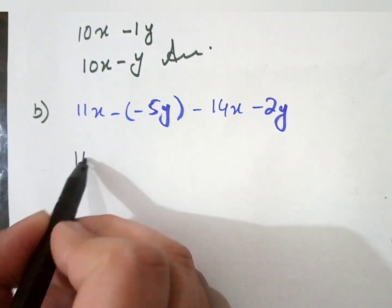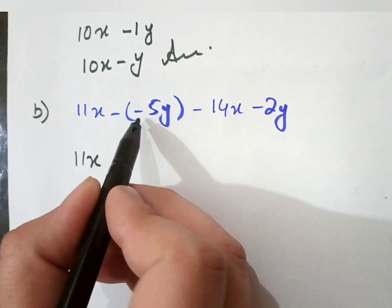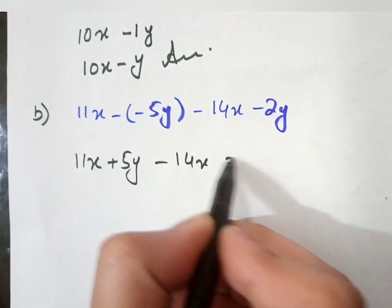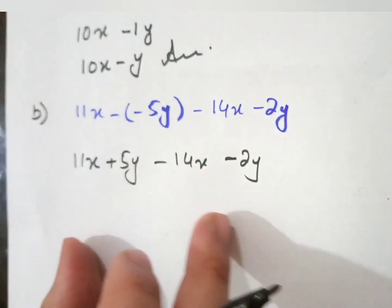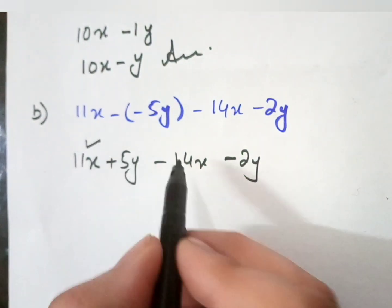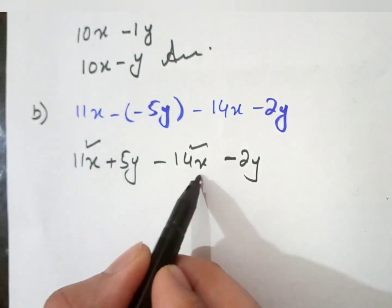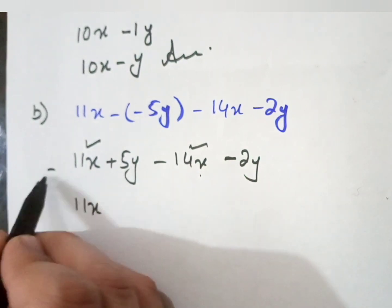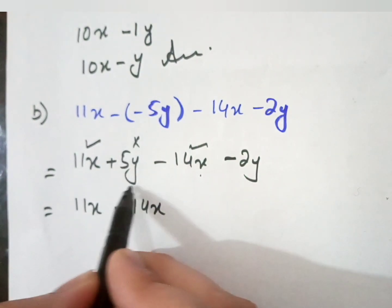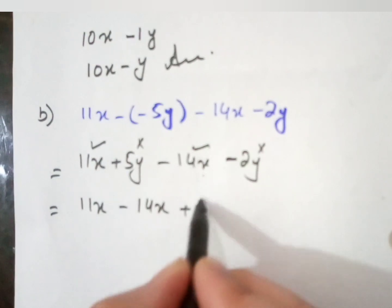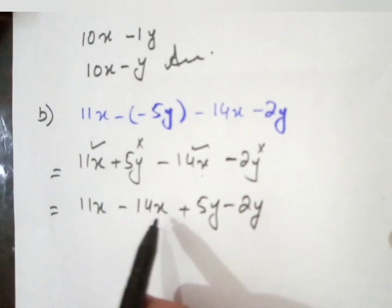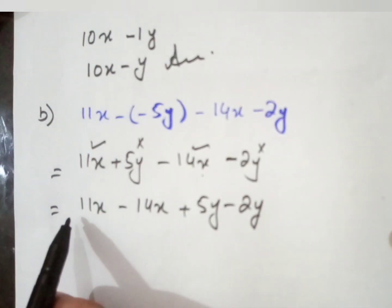In Part B, firstly we solve the bracket. There is a minus sign outside the bracket, so the inner signs will change: 11x plus 5 minus 14x minus 2y. Now rearrange the terms — write down the terms with the same variables together: 11x minus 14x, then the y terms: plus 5 minus 2y. Now we solve: 11 minus 14 — there is no sign shown so it is positive.